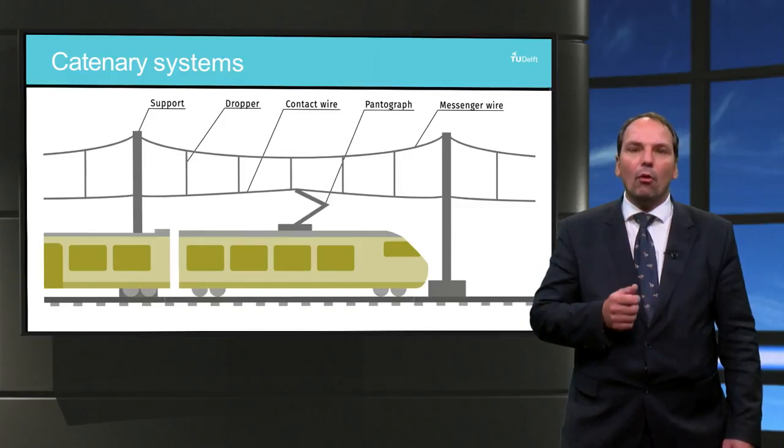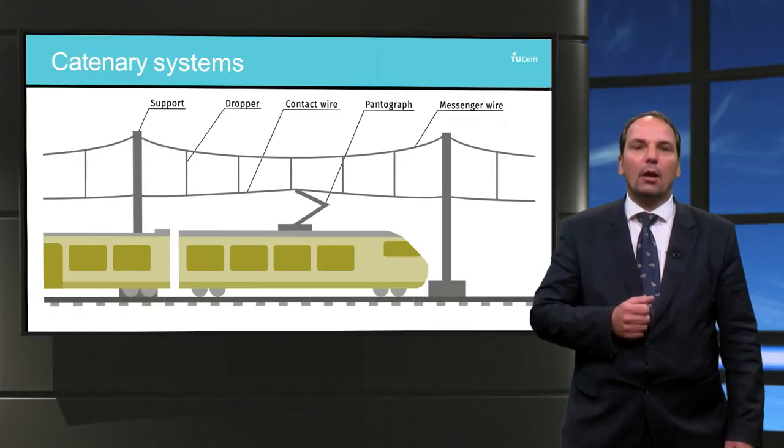This electrical coupling is achieved by mechanical contact which relies on the dynamical interaction between pantograph and catenary system. The catenary is more complicated than just a single high voltage cable. It contains messenger wires, contact wires, droppers, and steady support arms.